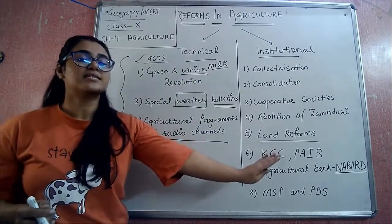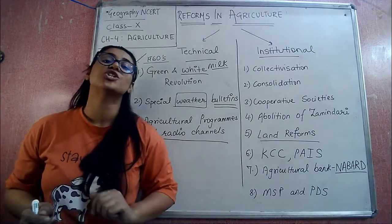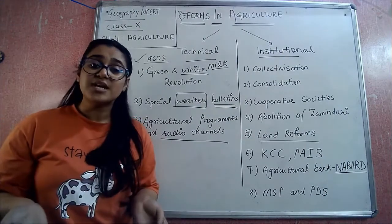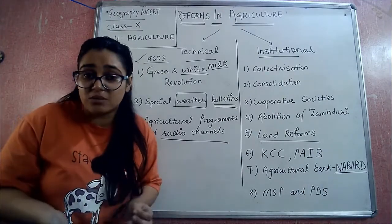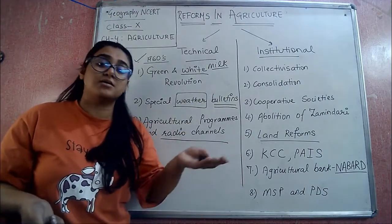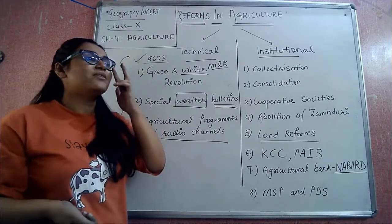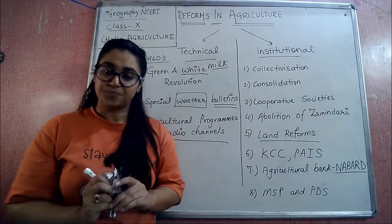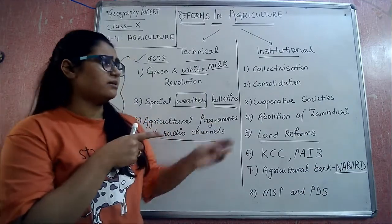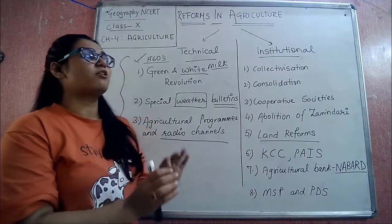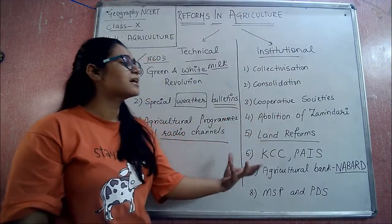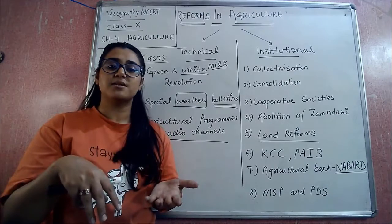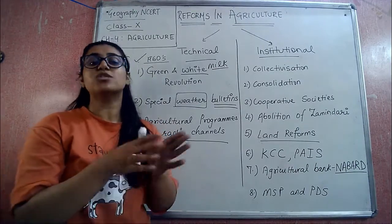Moving on to our next type of reforms: institutional reforms. An institution is some organization, or a ministry, or a group of knowledgeable people about crops and crop health. Everything related to an organization dedicated to helping farmers with their money problems, crop problems, or land problems falls under institutional reform. These are basically steps taken by the government which are not directly related to crop patterns, but they help the farmer to grow and settle well.